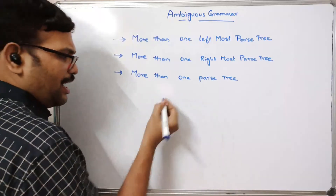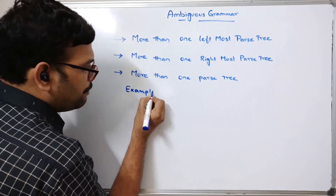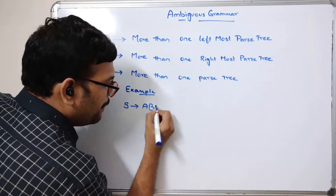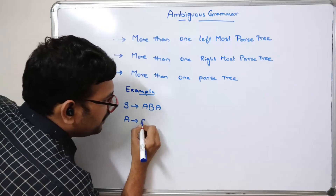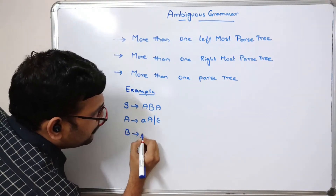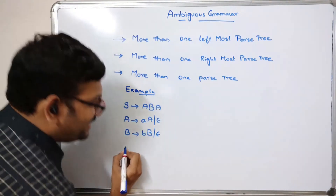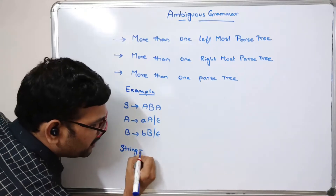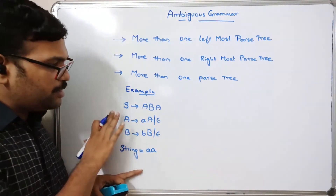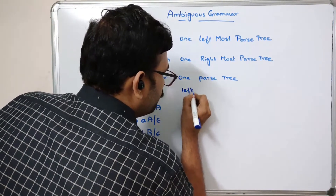Let us take an example. Consider: S → aba, A → aa | ε, and B → bb | ε. The string we need to derive is 'aa'. We'll use leftmost derivation, starting with S.